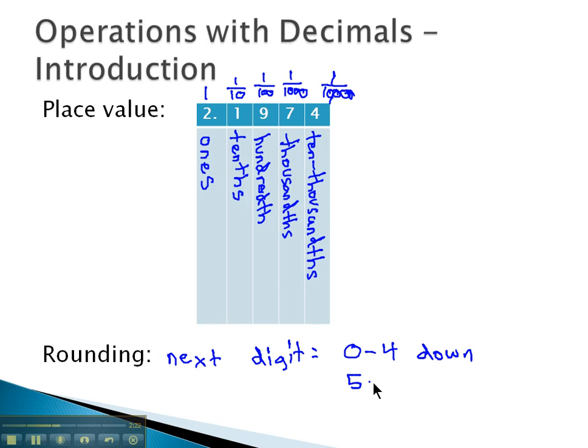And if the next digit is a five to nine, we round the number up. So let's take a look at a couple examples and see if we can identify place values and also round correctly.